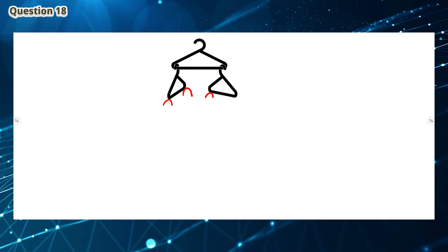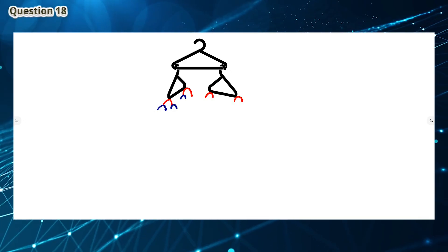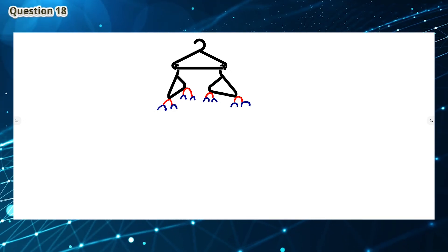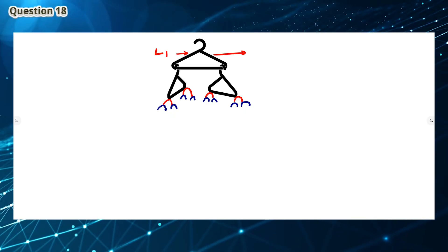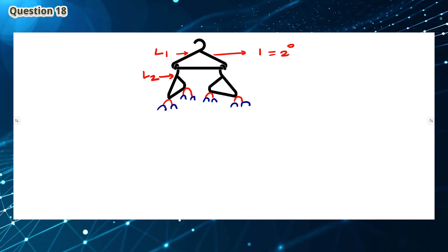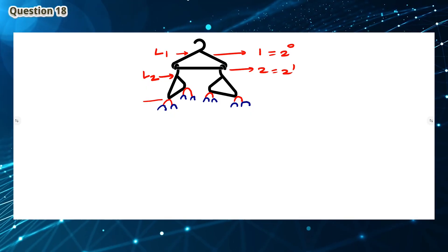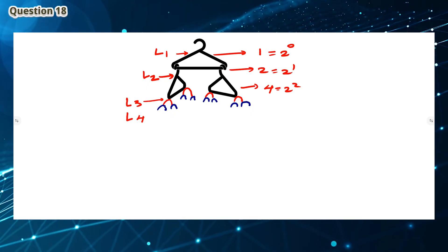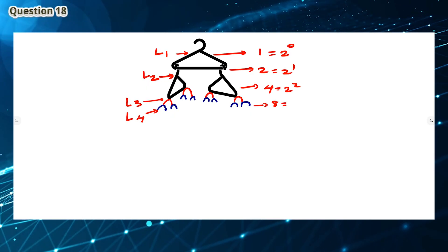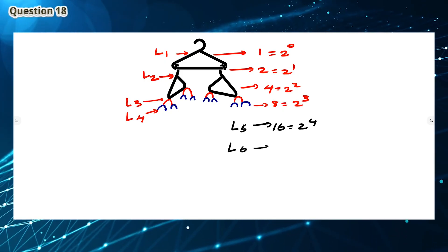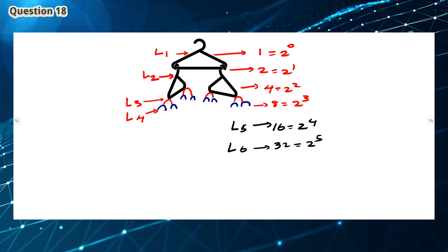Question 18: As you can see, we can complete another layer of this coat-hanger pattern. We notice a pattern: layer 1 has 1 or 2 to the power 0 coat-hangers. The next layer has 2 to the power 1 coat-hangers, and so on.